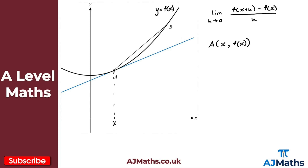We have a chord for points A and B, and if we pick another point C and connect A and C, we get another chord. We keep coming closer and closer to point A. From point A to point B, let's say there's an increase of h units, so the x-coordinate of B will be x plus h.